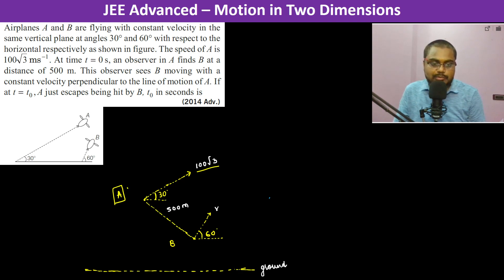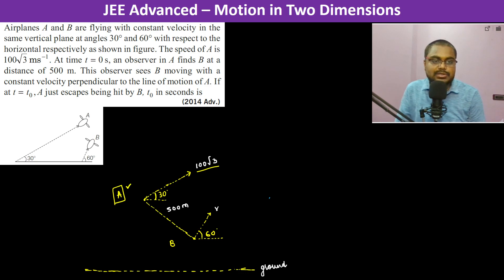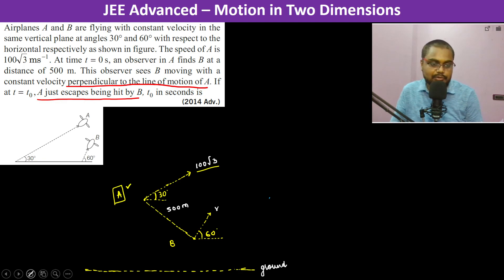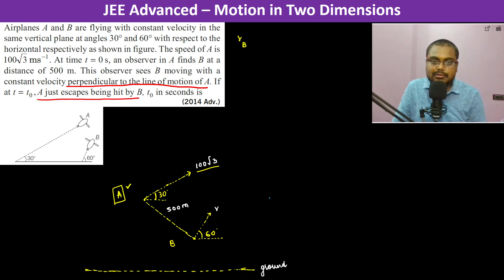So now what A is observing: A is observing that B is coming directly to him because A just escapes being hit by B. So almost it is in this direction only, and at the same time it is moving at a constant velocity perpendicular to the line of the motion of A. So therefore, we can see that velocity of B with respect to A is perpendicular to velocity of A.